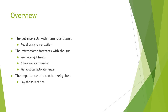Throughout the other modules in this program, we've discussed the various circadian clocks throughout the body — the master clock located within the suprachiasmatic nucleus of the brain, regulated by light exposure, and the various other peripheral clocks located in all of the organs and tissues throughout the body. However, the microbiome also has a circadian rhythm, which makes dealing with the microbiome a lot more complex than what most people would have you believe.